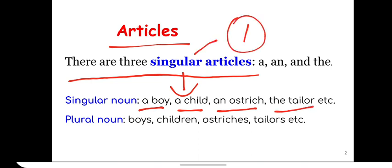Singular means one. So if a noun means one like boy, a boy means one boy there. All the countable nouns can either be singular or plural. If that is singular, you must add a or an before it normally. So a boy, an ostrich, the tailor, right?